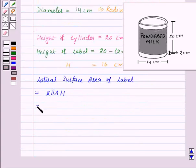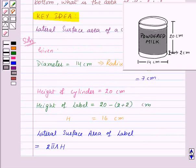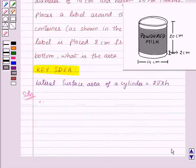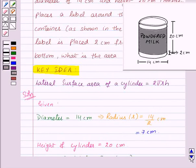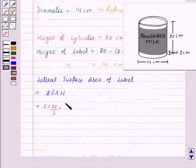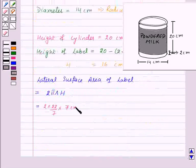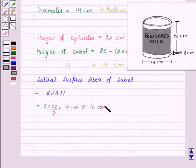2 into π, that is 22 by 7, into r—r, that is radius, is equal to 7 centimeters—into h—h is 16 centimeters. So here 7 and 7 will get cancelled and we will get...